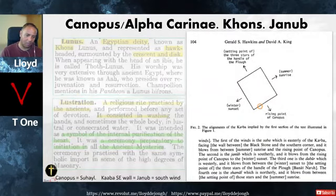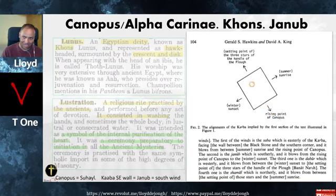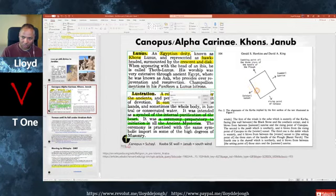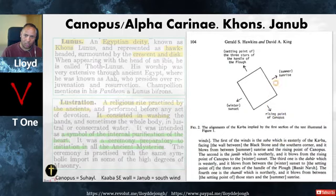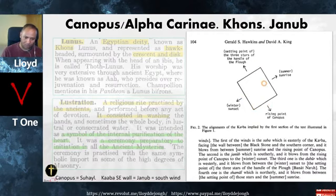The Kaaba is situated very specifically: this wall points directly towards the summer sunrise; this side points to the three stars which are the handle of the plow; this wall points to the winter sunset; and this wall points to the rising point of Canopus — the second brightest star in the sky. The Kaaba itself represents Sirius, the brightest star in the sky. These walls also represent the four winds — so it is meteorological as well as astrological.